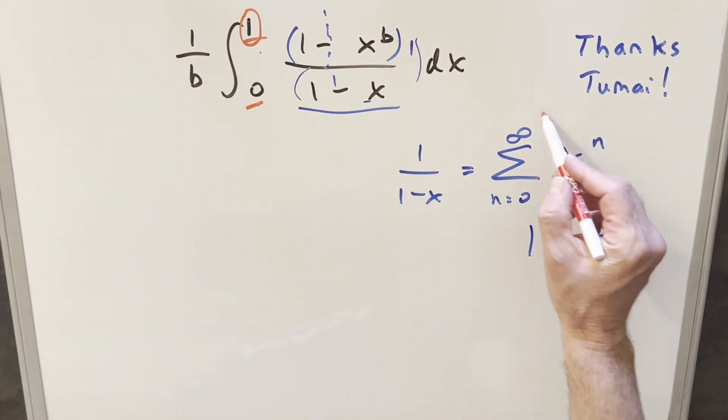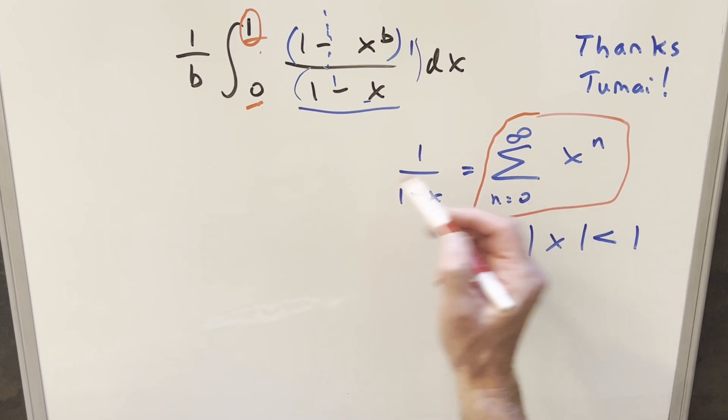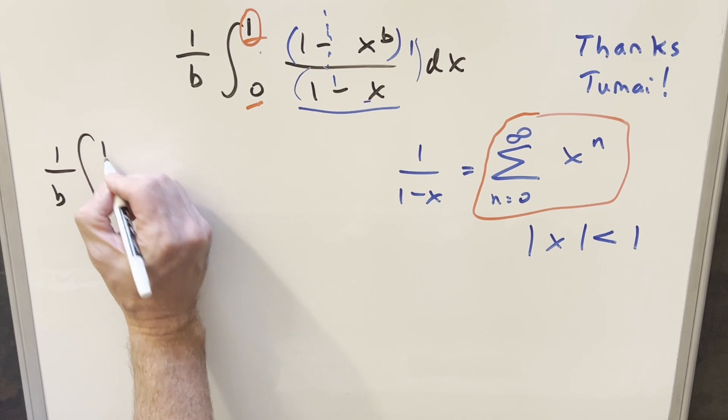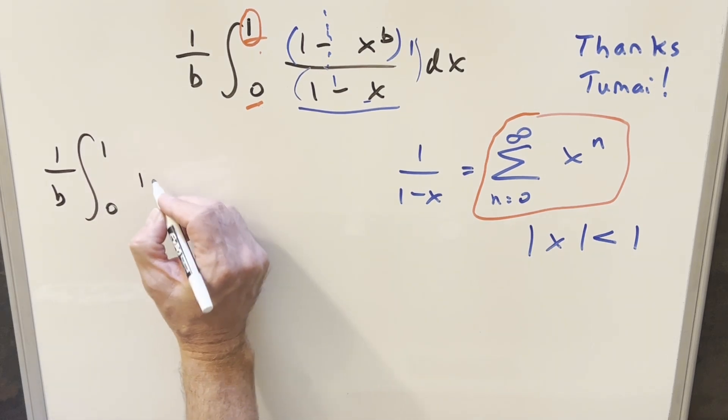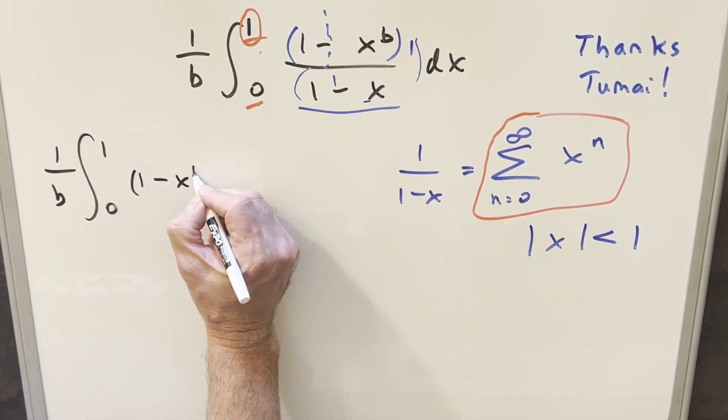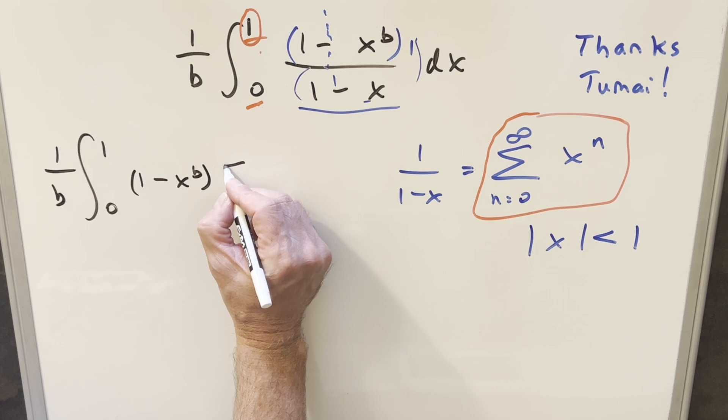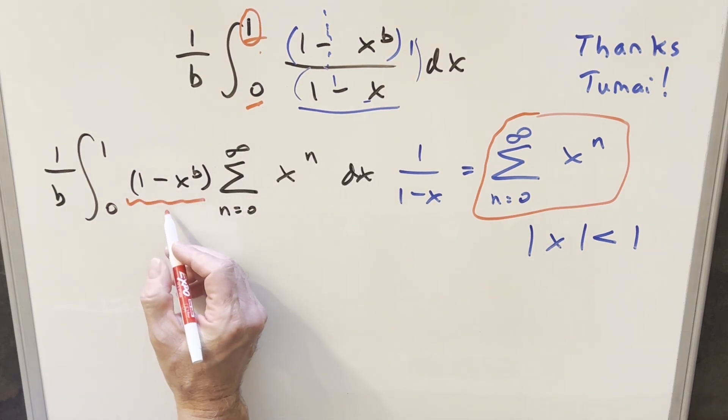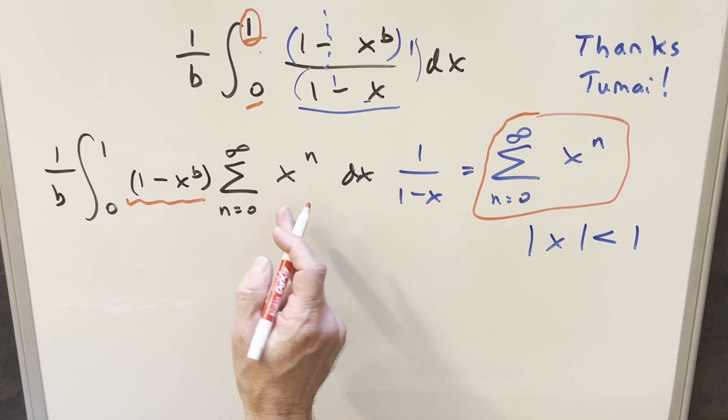So what I can do is take this right here and plug it back into our integral for the 1 over 1 minus x part. So we're going to have this thing in front, and then we'll write this as 1 minus x to the b times this series. And then from here, this right here has no dependency on n, so you can think of it like a constant with respect to the series, and I can just multiply this in.